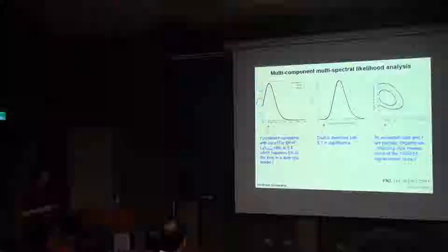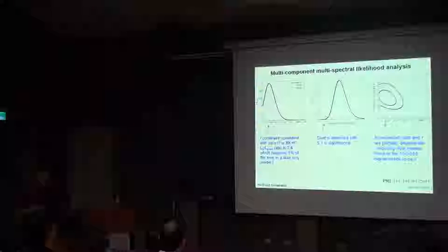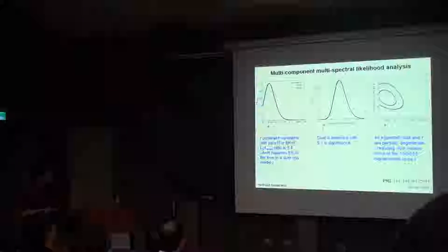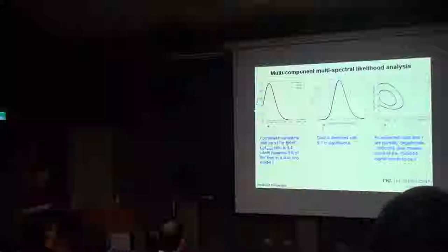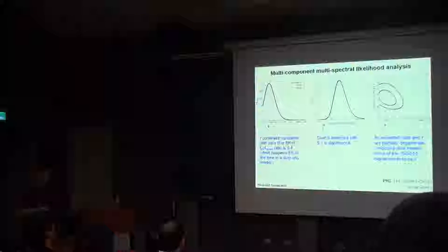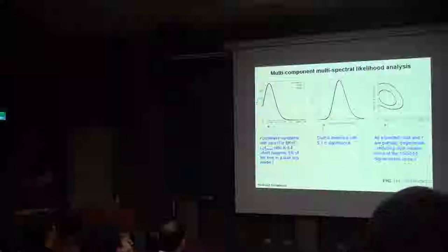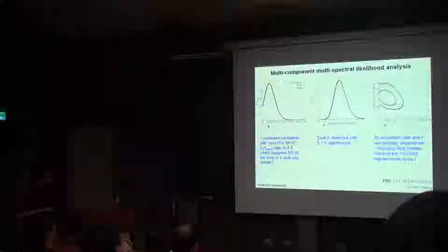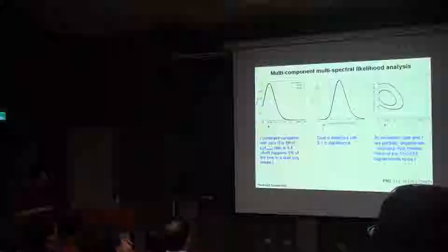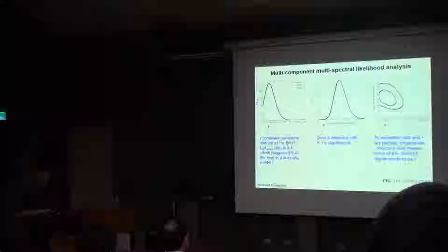We also added Keck data, which is similar data but with much better sensitivity. That produced a likelihood curve consistent with the BICEP2 likelihood curve, but it moves the likelihood toward the left — toward smaller tensor r values. The combination of the two is this solid likelihood curve, so r = 0.2 doesn't look very likely anymore.